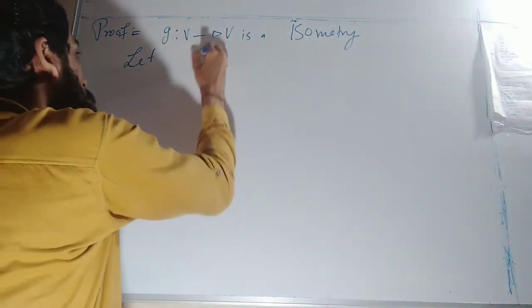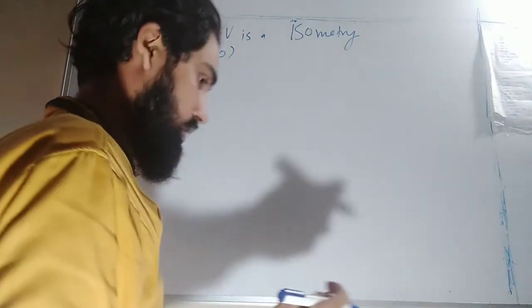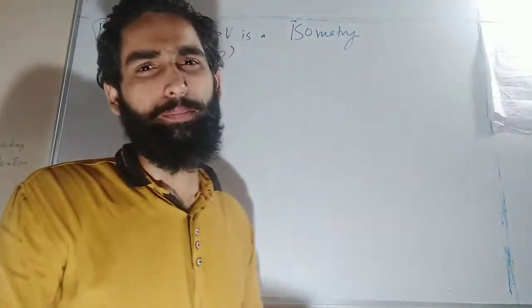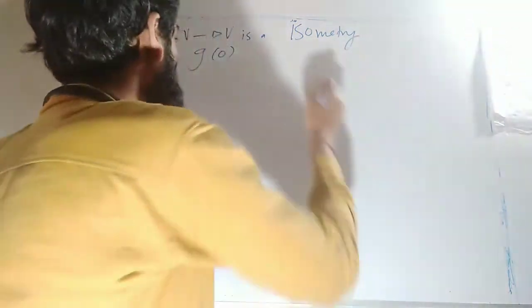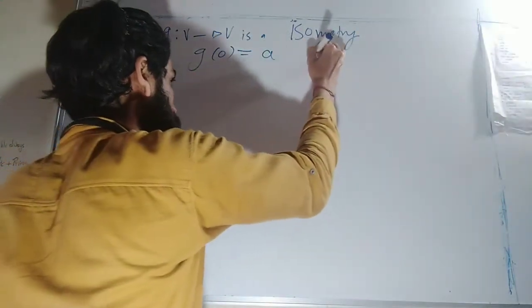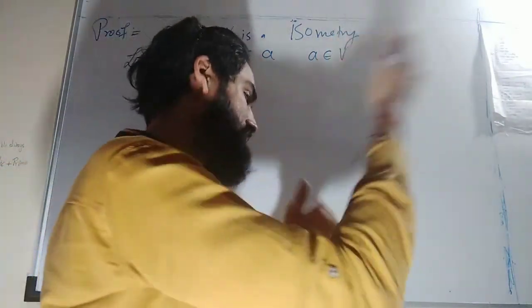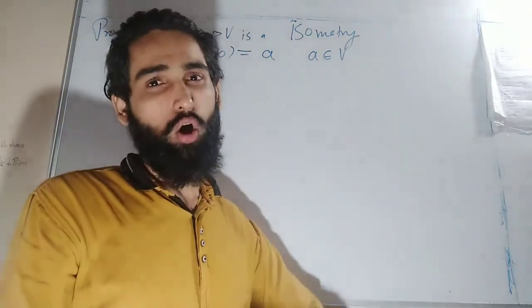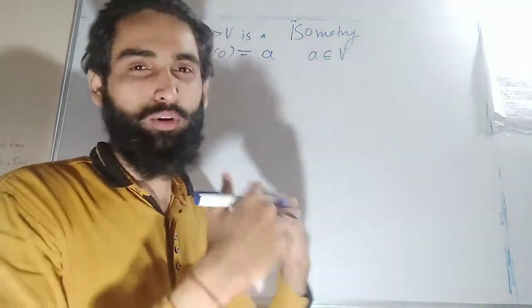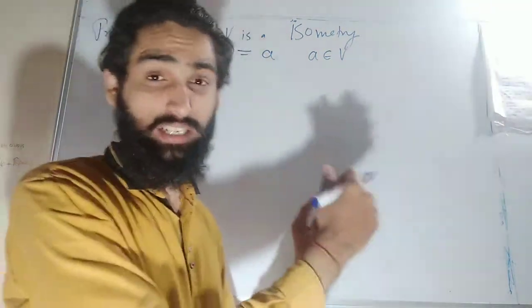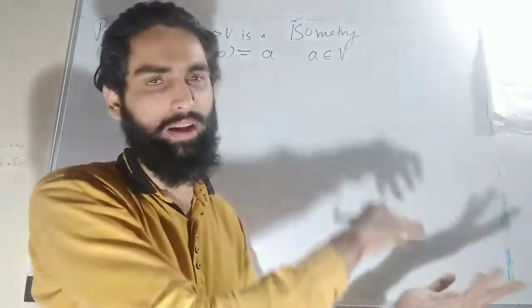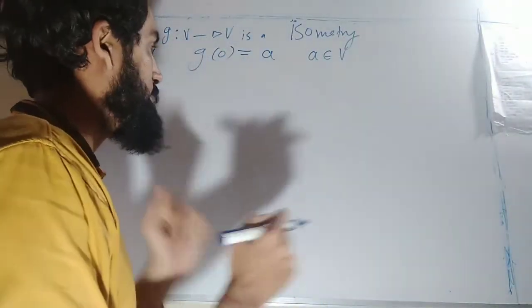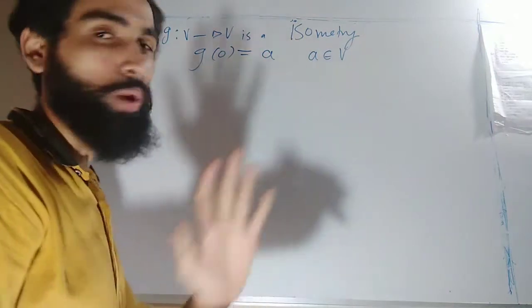Let me see where the origin goes. It might go to zero or it might go to some other element — let it go to a, where a is an element of V. It might be zero, in which case it becomes an orthogonal transformation, but in general it might or might not be zero. So in general, g(0) = a.